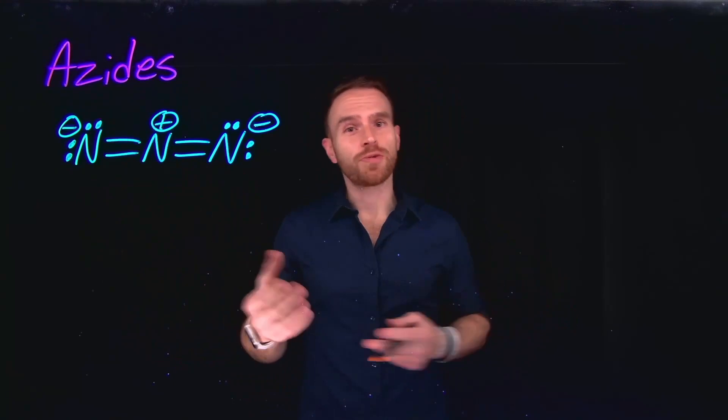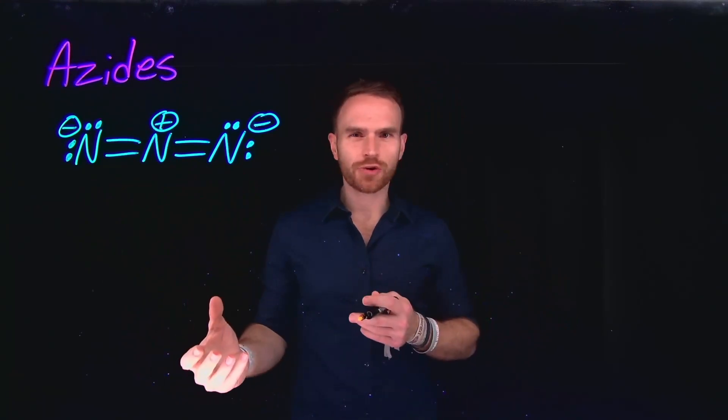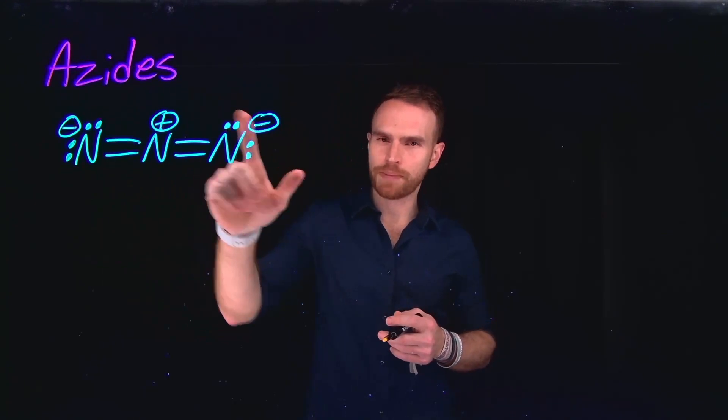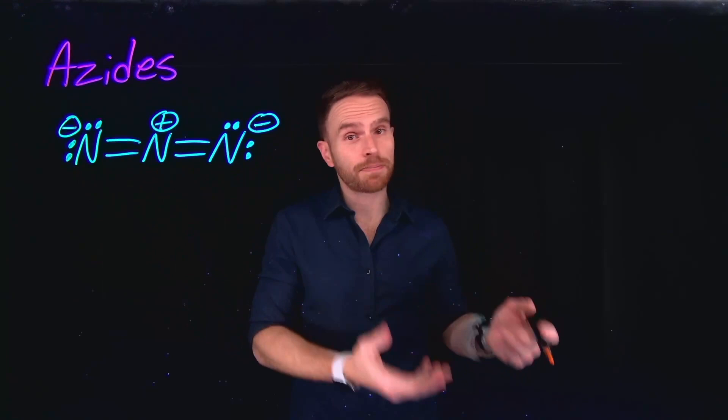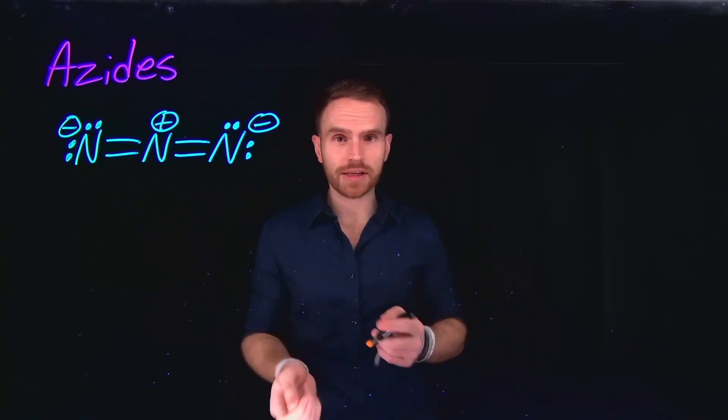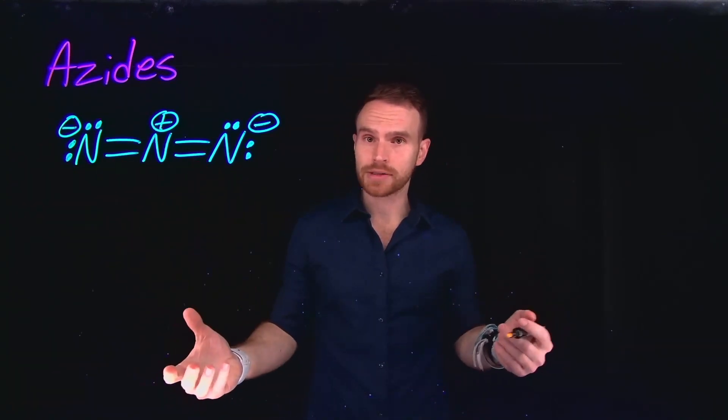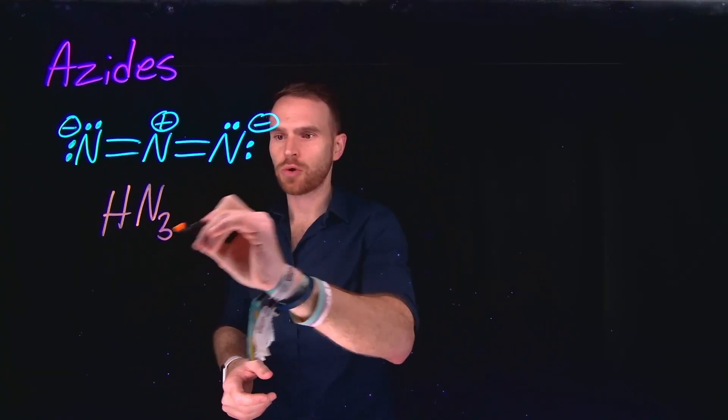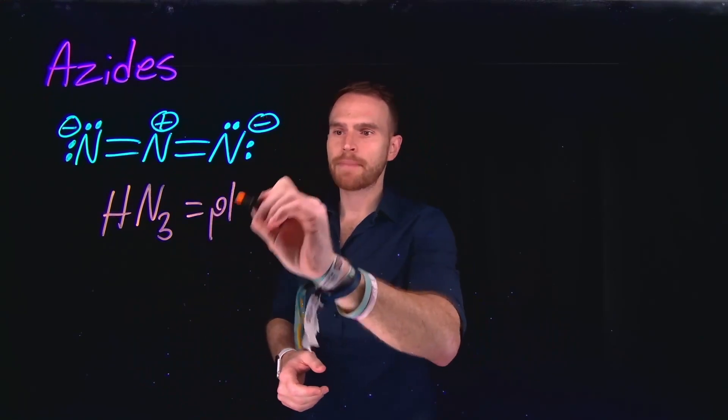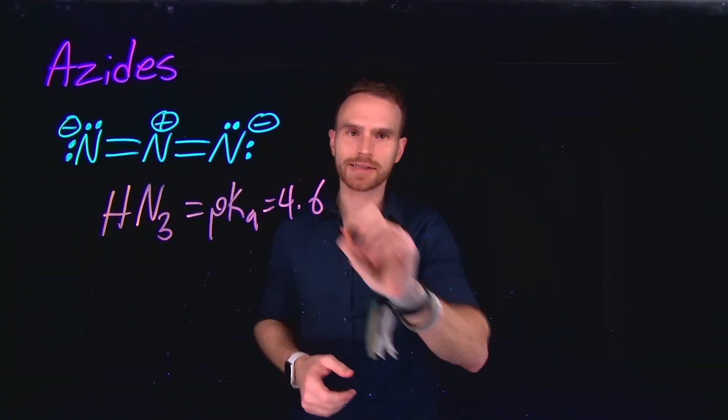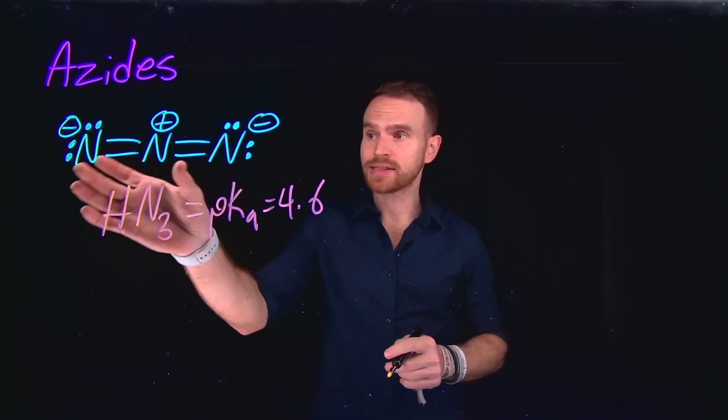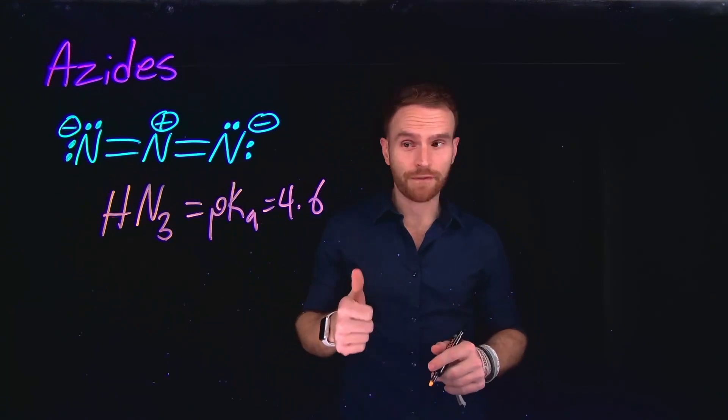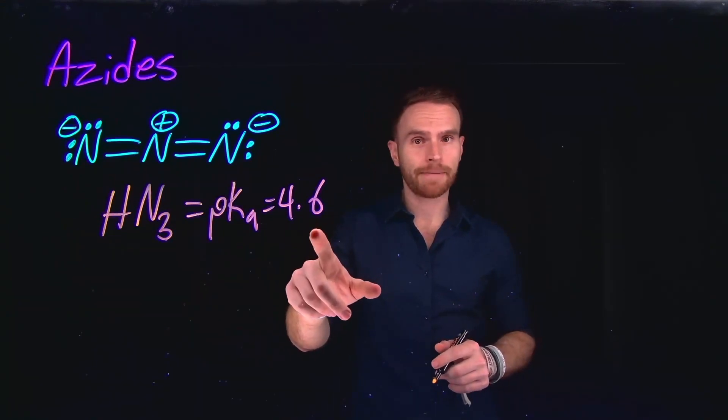Azides, or azides as you may hear them referred to as, are fairly strange molecules. They contain two nitrogen atoms that contain a negative charge with two lone pairs on them, and a nitrogen atom in the center that's positively charged. All three of these nitrogen atoms are connected via double bonds. If we were to look at the pKa of the conjugate acid, which is hydrozoic acid, we would find that that pKa value is around 4.6. And this should let you know that the azide, which is the conjugate base of this hydrozoic acid, is going to be very nucleophilic because the conjugate acid has a very low pKa.